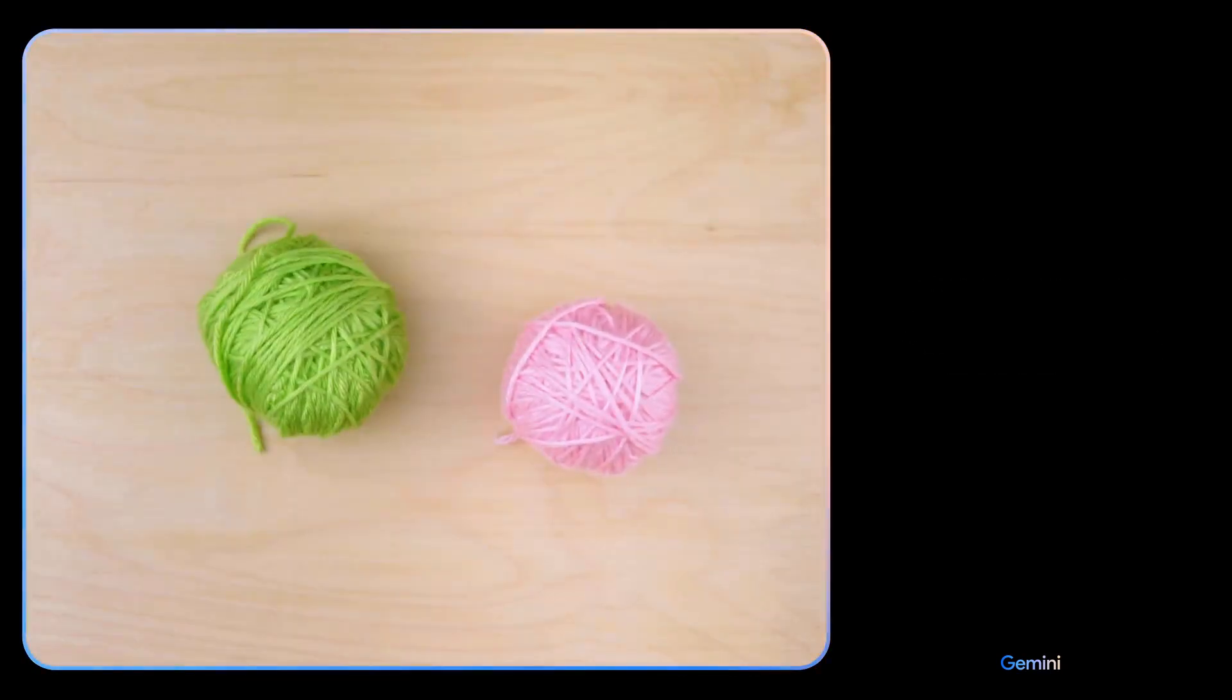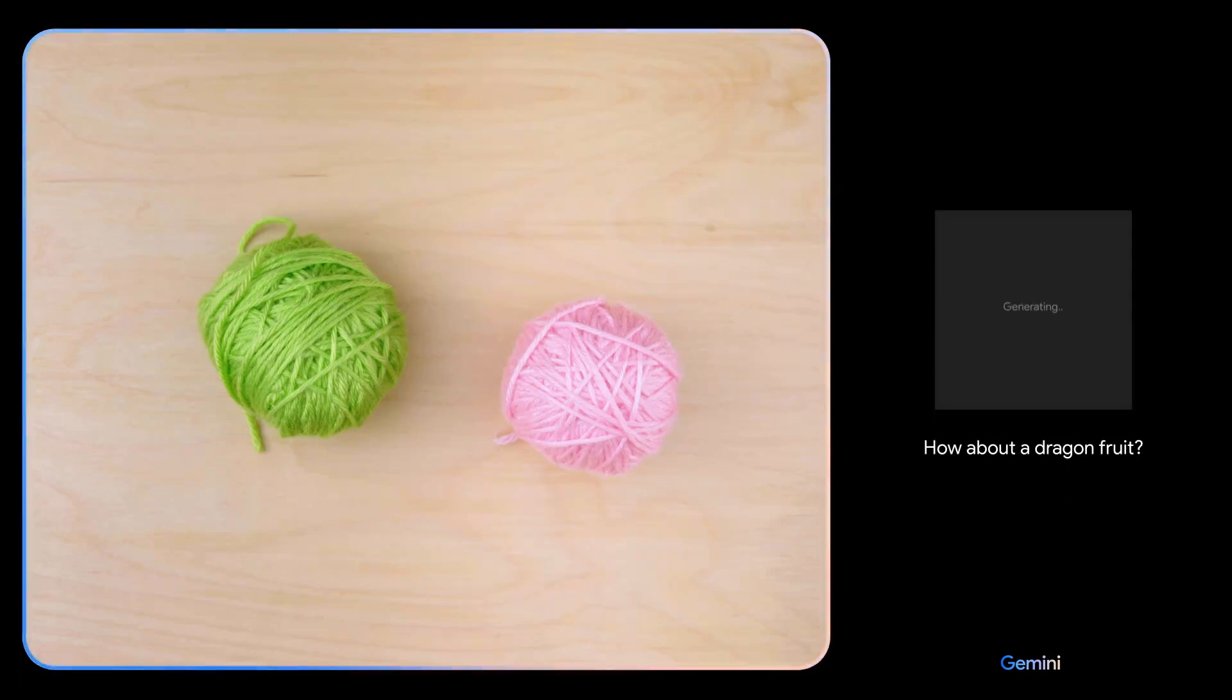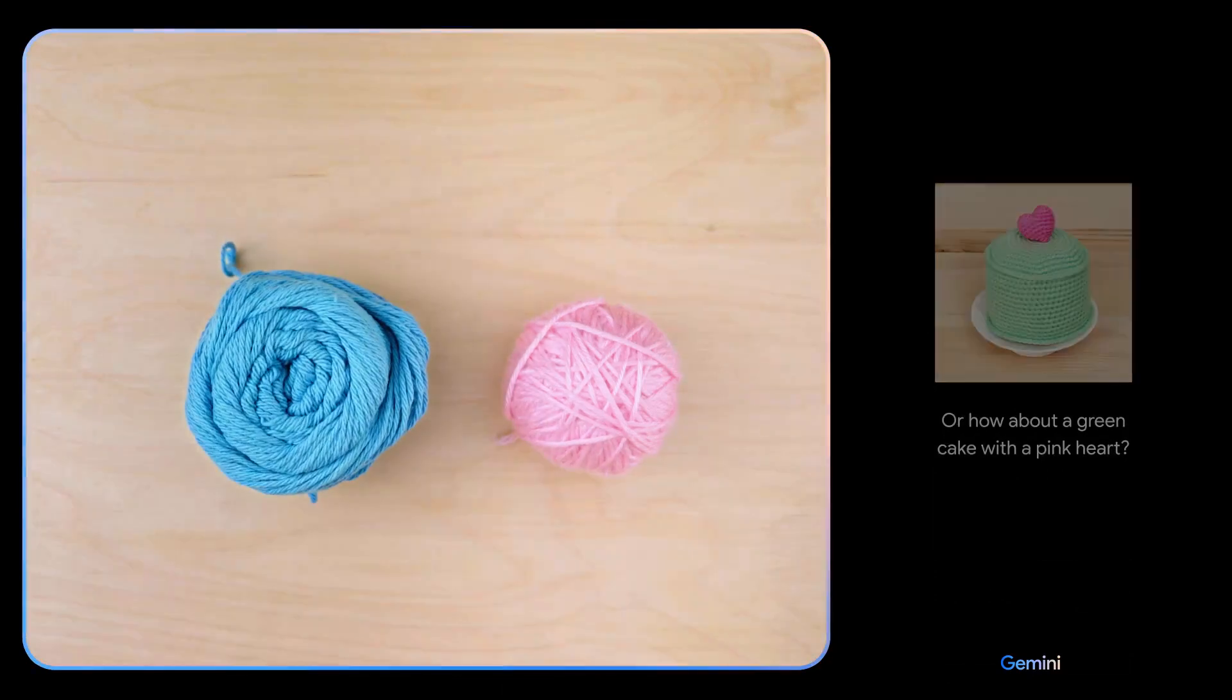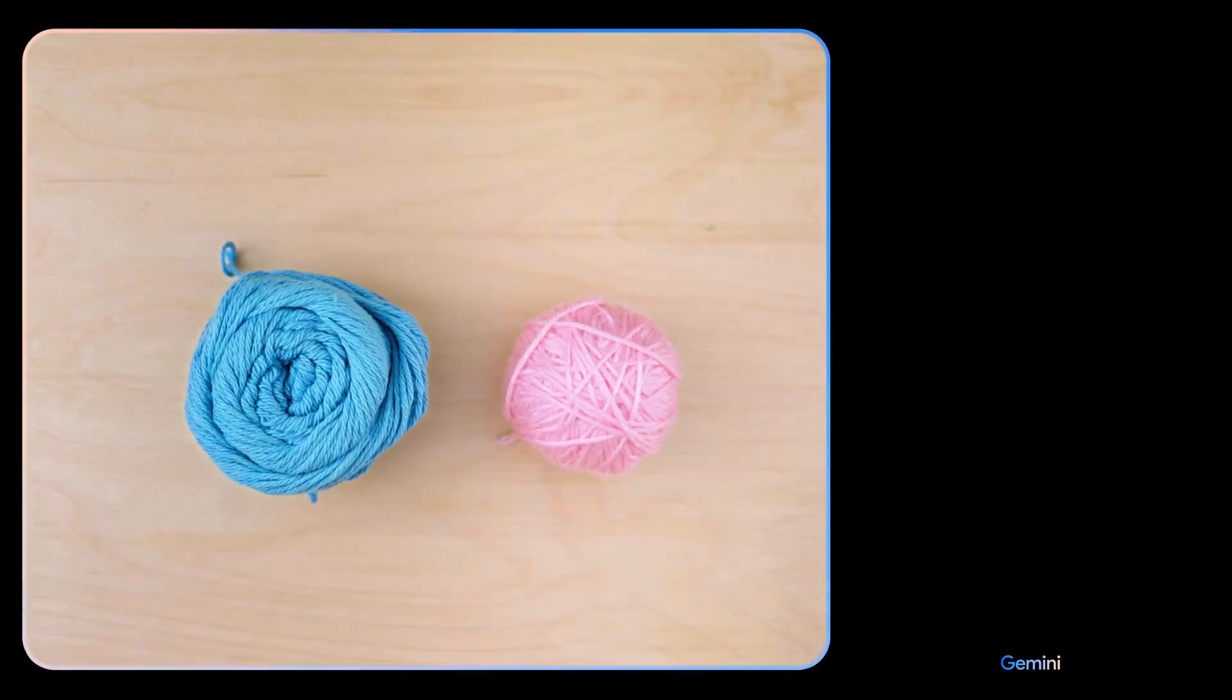Give me some ideas for what I could make with this. I see pink and green yarn. How about a dragon fruit? Or how about a green cake with a pink heart? Okay. How about these colors? And maybe show me some animals.